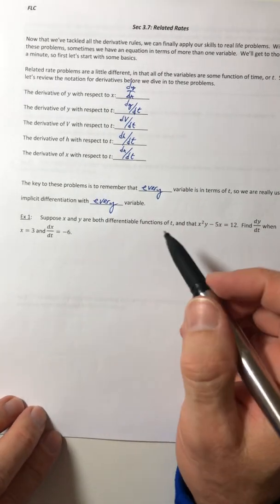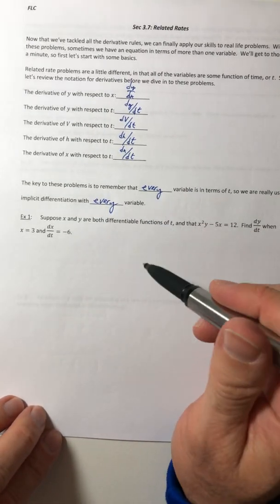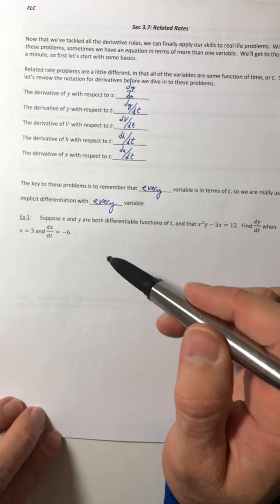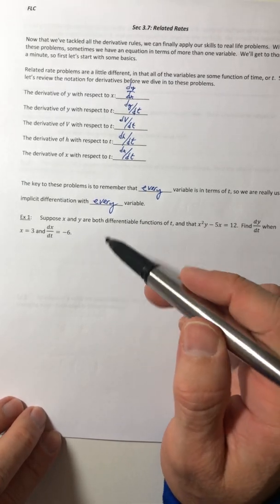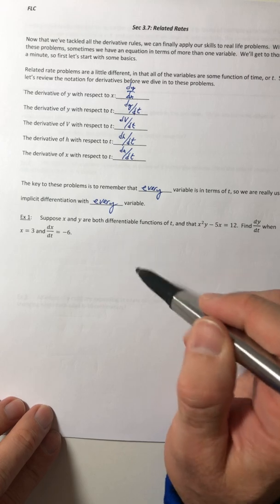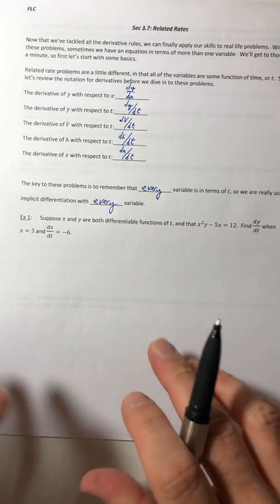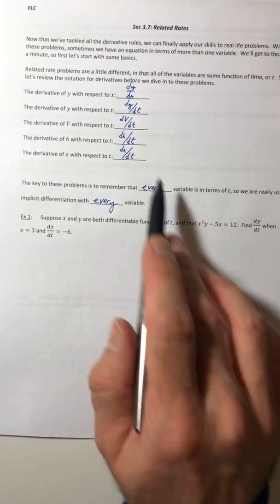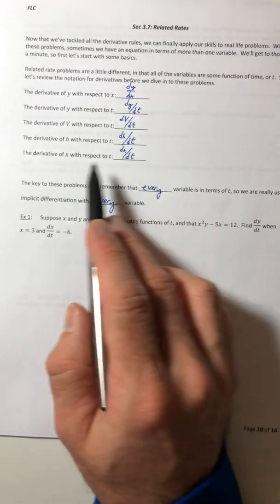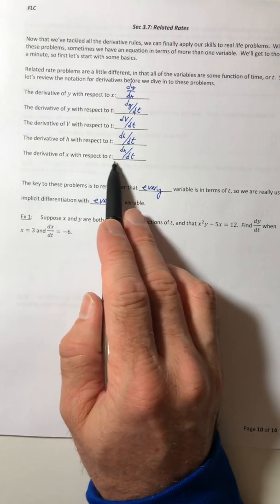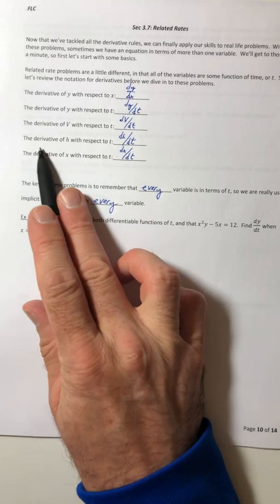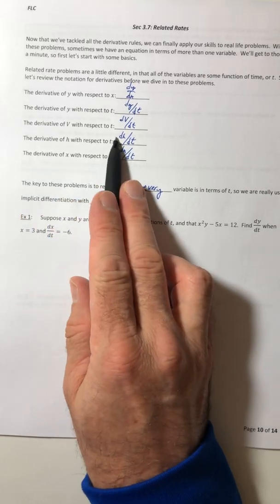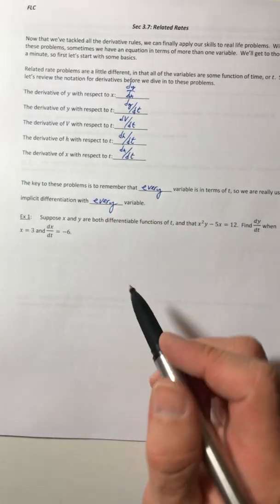So remember with implicit differentiation, that process was every time you took the derivative of a y, you had to multiply by the dy/dx. Well, now you're going to broaden and generalize that to every single variable, but it's going to be with respect to t. So if you do the derivative of an x, you've got to multiply by dx/dt, the derivative of an h multiplied by dh/dt, and so on and so forth.